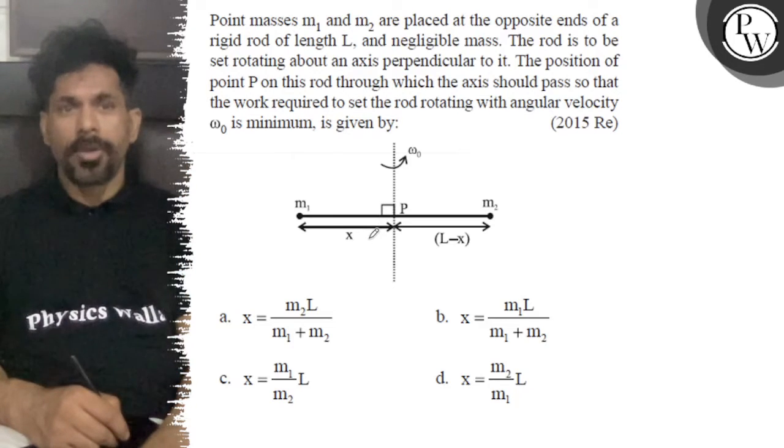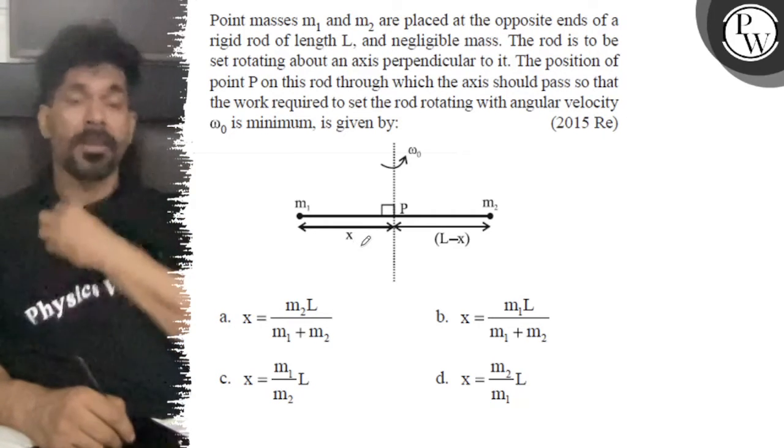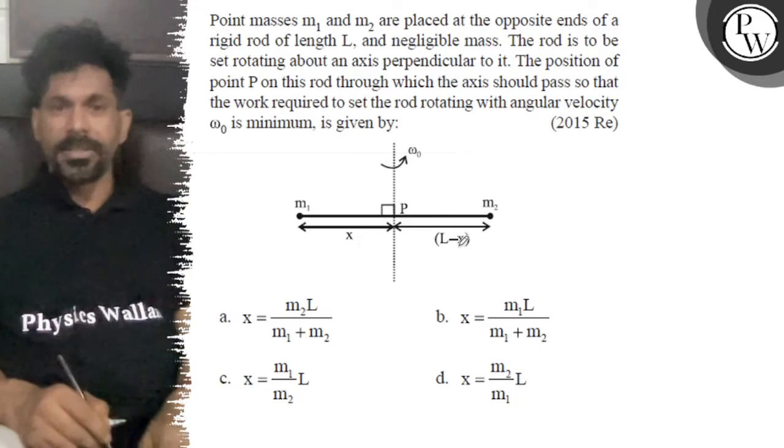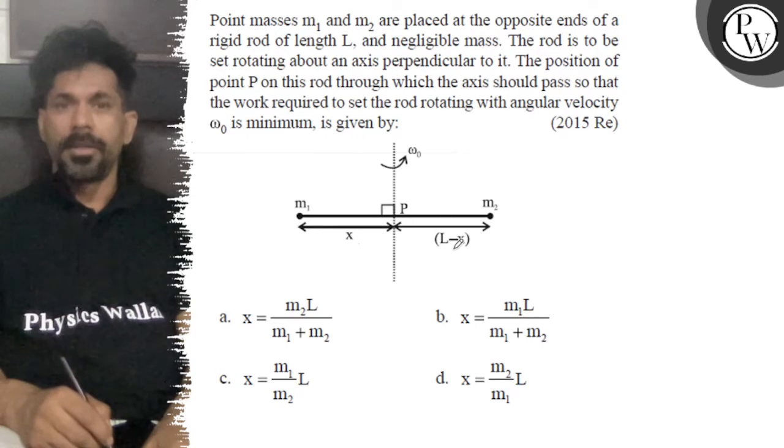Hello Bacho, let's see the question. Point masses M1 and M2 are placed at opposite ends of a rigid rod of length L, negligible mass.